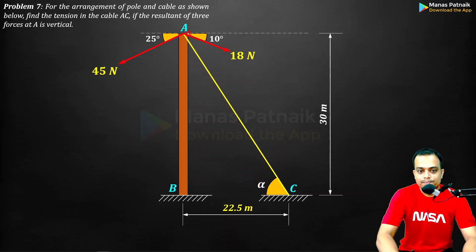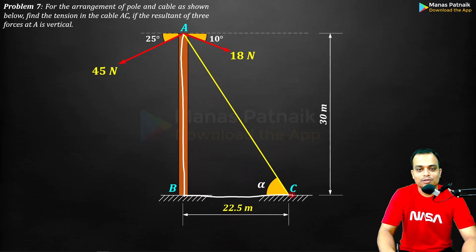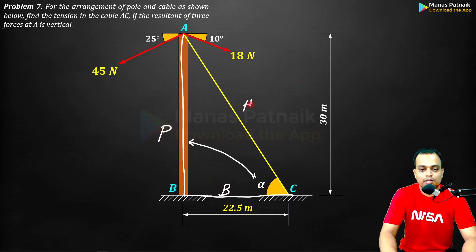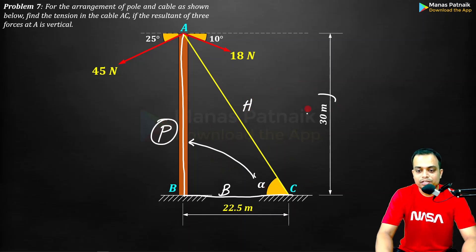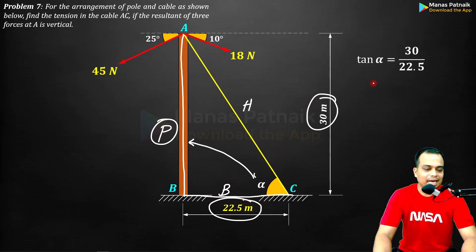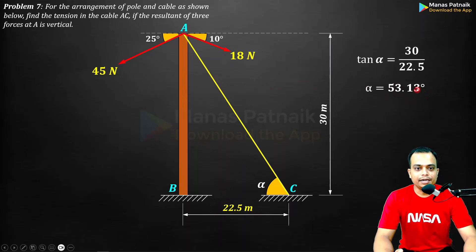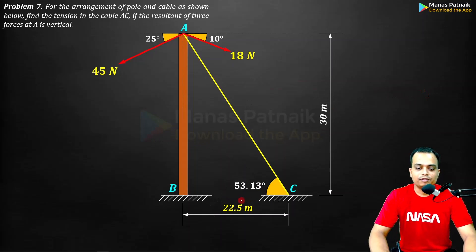The first thing to do is calculate angle alpha. There is a right-angle triangle here — the side in front is the perpendicular and the other is the base. We apply tan(alpha) = perpendicular / base = 30 / 22.5. Taking the inverse, alpha works out to 53.13 degrees.